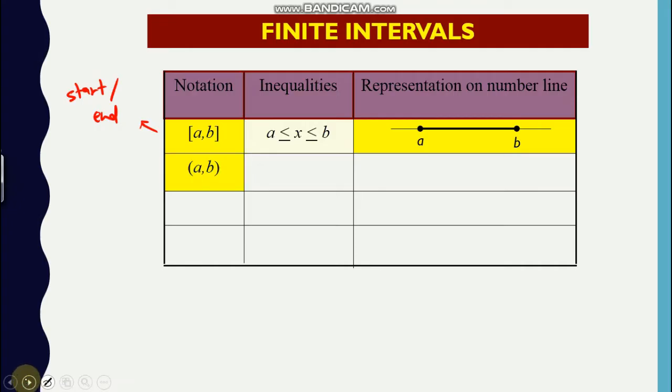So how to represent that into a number line? That should be in between a and b with a full dot, with a full circle. And then accordingly, because we have an open bracket here without equal sign, that should be an empty circle at a and b.